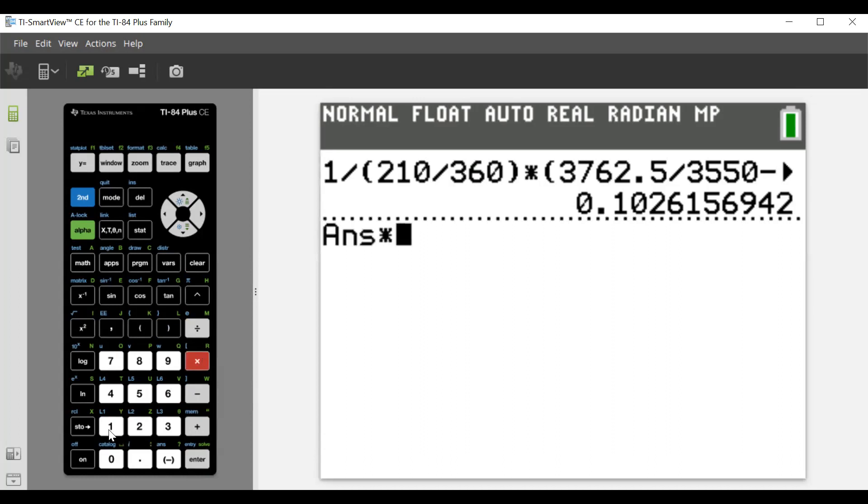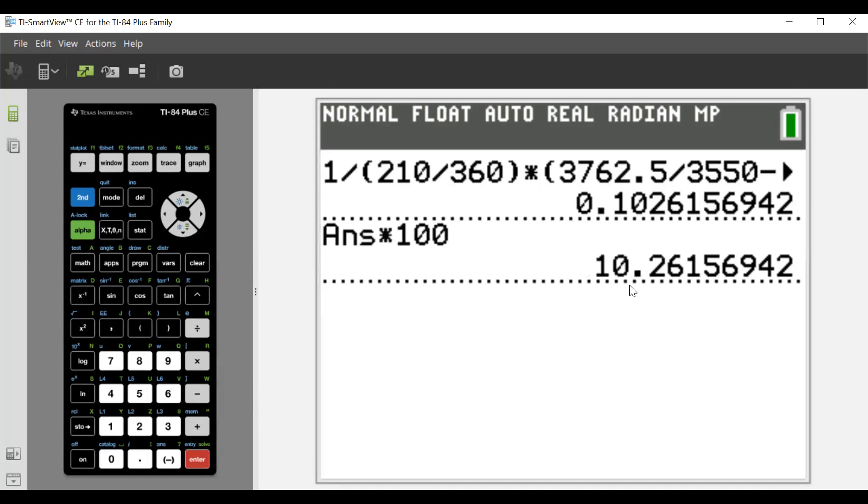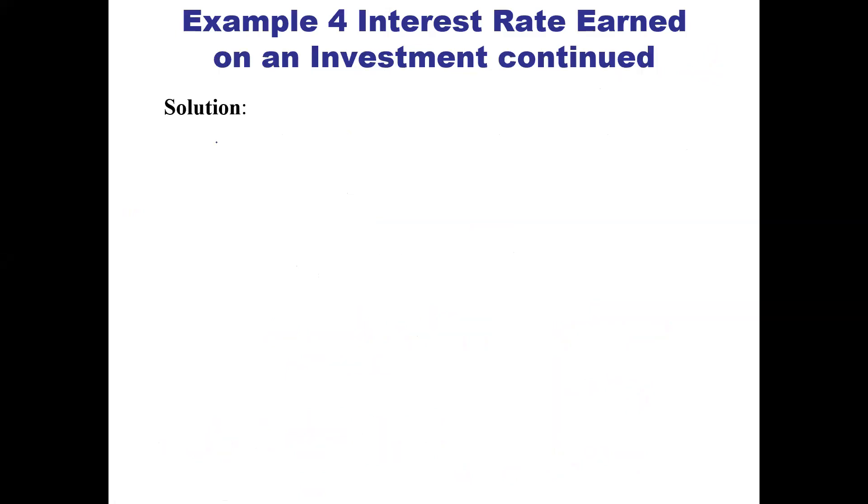So again, we want it as a percent, not as a decimal. So multiply it by 100. And we went to three decimal places. So it'd be 10.262%. And I think I'm going to write it over here. So our rate is going to be 10.262% to three decimal places.